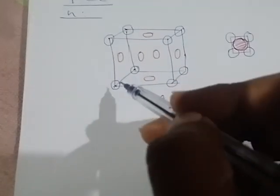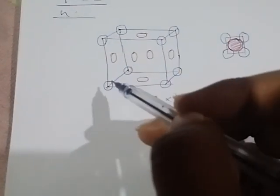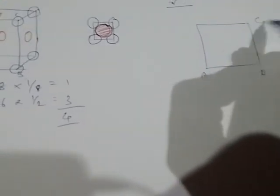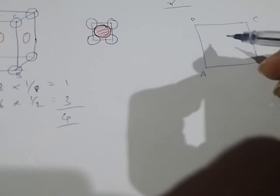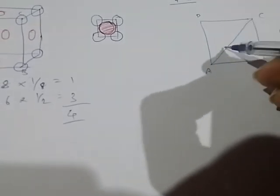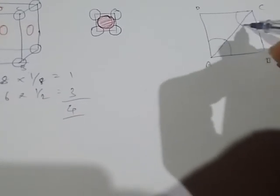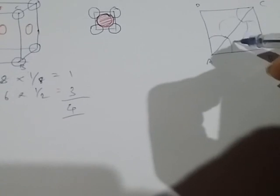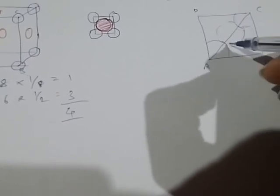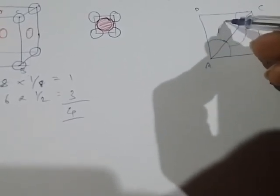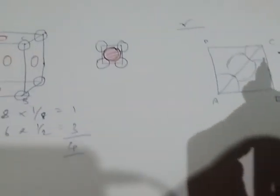Consider a cubical shape with vertices named A, B, C, D, E, F, G, H. Along the face, with the face center atom on the side A to C, atomic radius is easy to determine. We use a right angle triangle A, B, C for the derivation.